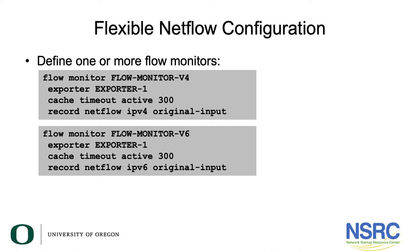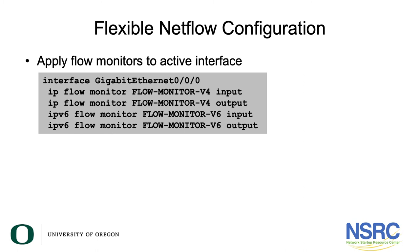We then use that exporter in the flow monitor. We have a v4 flow monitor using the exporter we created, again with a cache timeout of 300 seconds, and we're capturing input traffic for v4. We do the same thing for IPv6 using the same exporter but capturing v6 input traffic. Then we apply the monitors to the active interface: 'ip flow monitor v4 input', 'ip flow monitor v4 output', and the same for v6 input and output.